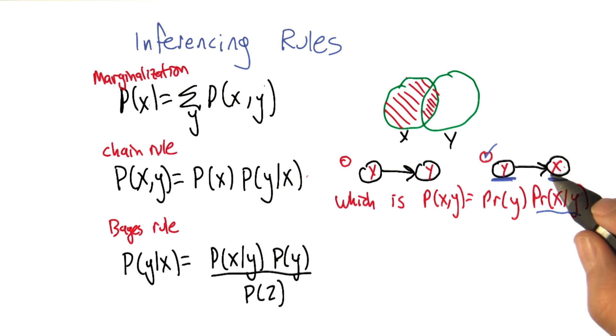Well, the arrows are a form of dependence, but it's not a causal dependence, necessarily. It's just the way that the probabilities are being decomposed.